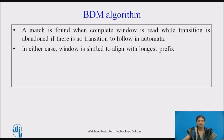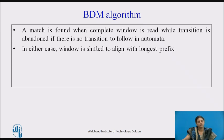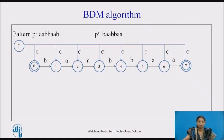A match is found when the complete window is read. There are two cases: either we have finished reading the window, or we have reached a state with no transition. In either case, the window is shifted by the length of the longest prefix already stored. Let us see with an example how the BDM algorithm works.